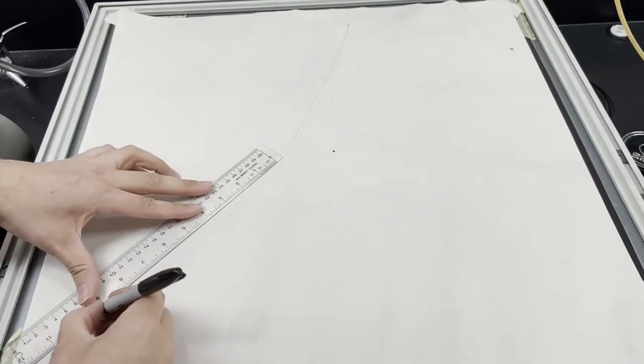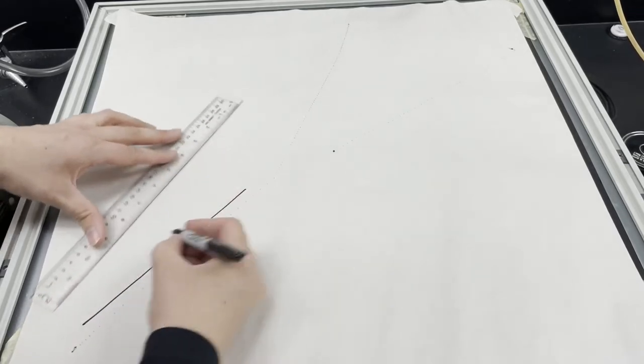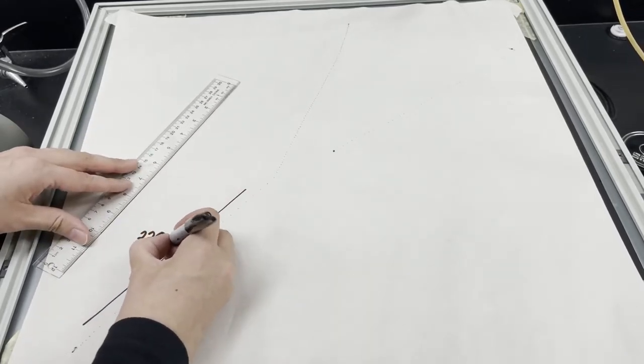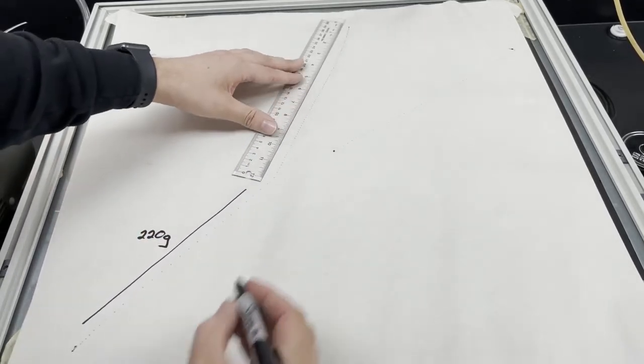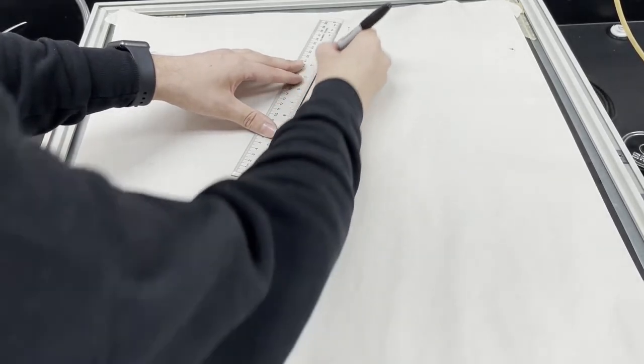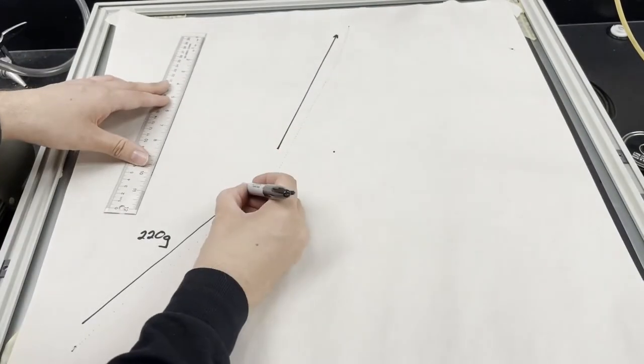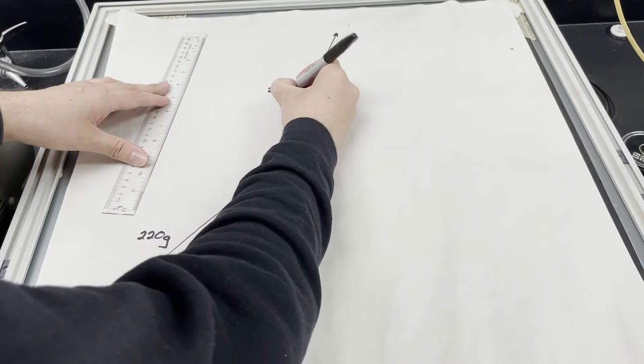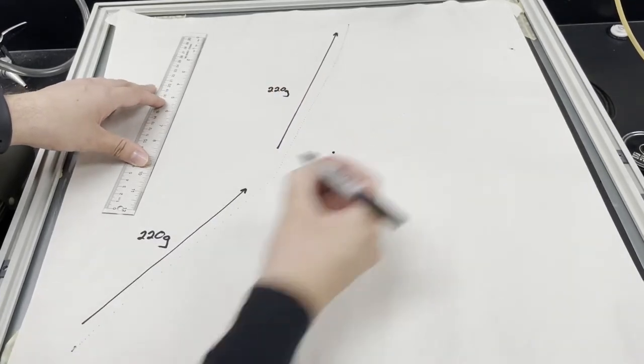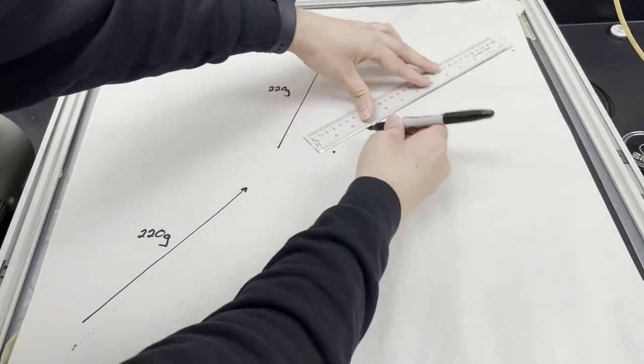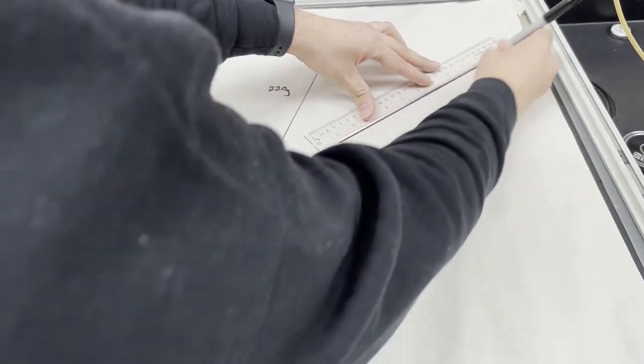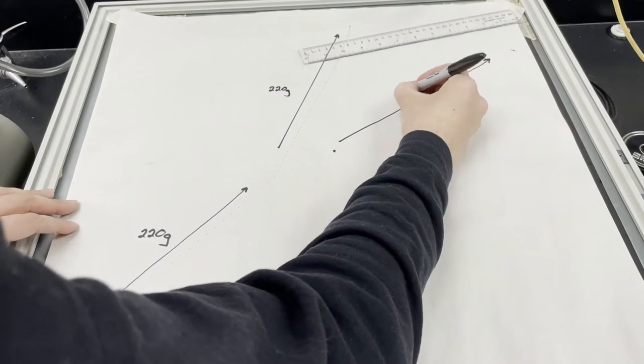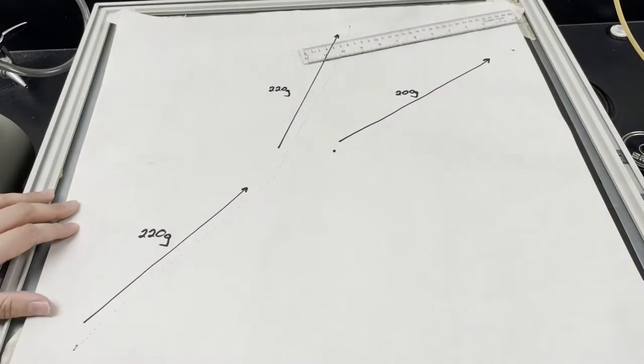So this one here was initially our 220-gram puck, and then it hit off and went in this direction, like so, 220-gram puck. This one, which was initially at rest, moved off in this direction, and it was our 200-gram puck.